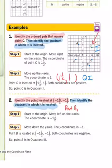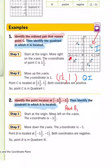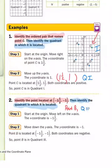Now the second part is to identify the quadrant. Remember this is quadrant 1 going counterclockwise, this is quadrant 2, and down here where point B is, it is quadrant 3. So our answer for that one is going to be Q Roman numeral 3 — it looks like three I's.